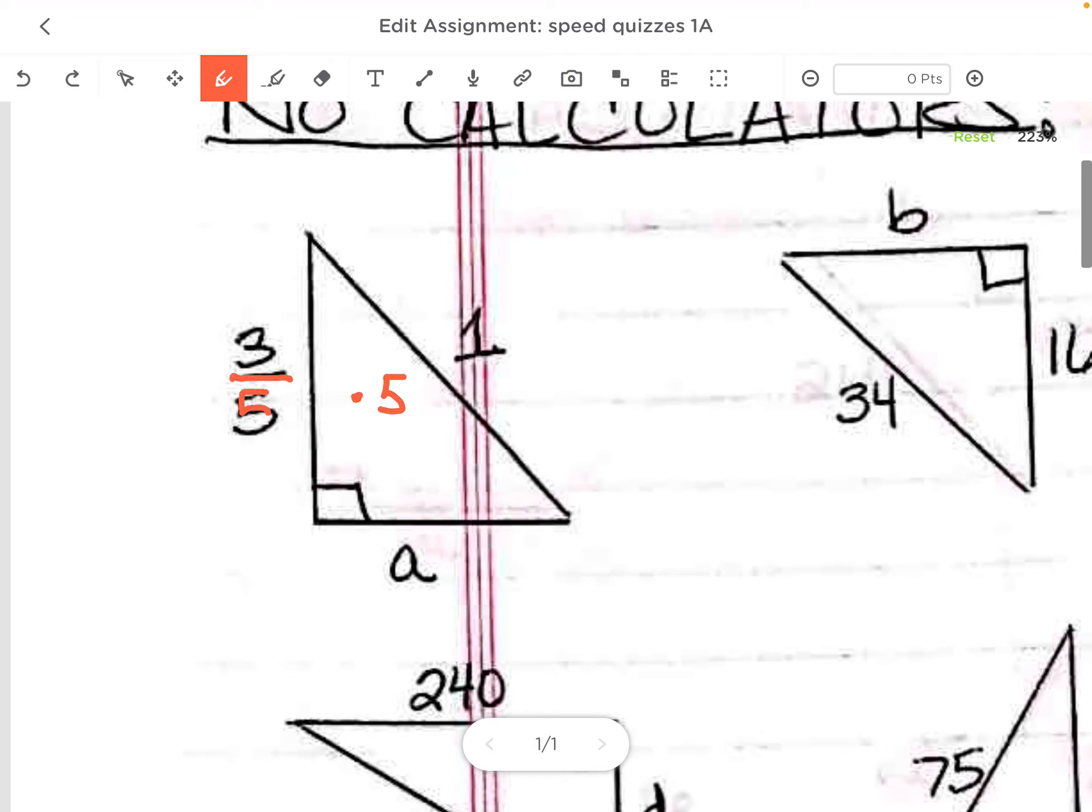Again, the denominator. So when I multiply this by 5, these cancel, and my side is just 3. Multiply this by 5 and I have 5. So obviously, this is a 3, 4, 5.